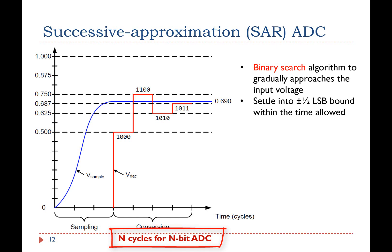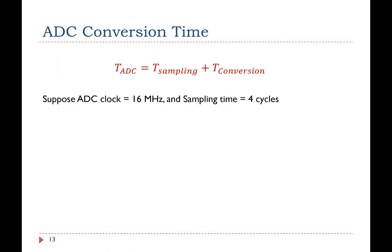The total ADC time is the sum of the sampling time and the conversion time. The conversion time takes n cycles, where n is the ADC resolution. As discussed previously, the sampling time is programmable. For example, if the ADC clock has 16 MHz and the sampling time is set to 4 cycles, for 12-bit ADC, the total ADC time is 4 plus 12, that's 16 cycles, or 1 microsecond. For 6-bit ADC, each conversion takes 10 cycles, or 0.625 microsecond.